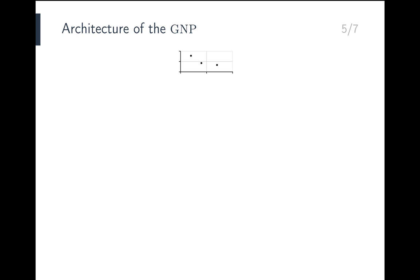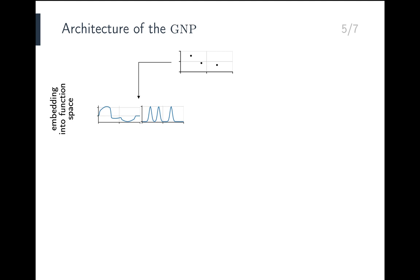Let's see how the GNP works by walking through a forward pass of the model. We first consider the mean map, which takes a dataset to the mean function of the prediction. The graphs and images you're about to see are from an actual model trained on samples from a GP with a Matern 5.2 kernel. Using a set convolution, we embed the data into a function space, producing two embeddings. The function on the left is called the data channel — a kernel regression estimate of the data. The function on the right is the density channel — a kernel density estimate. Without the density channel, the model would not be able to distinguish between observing zero or no data.